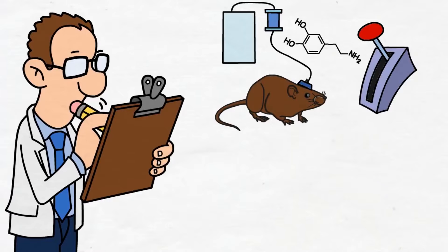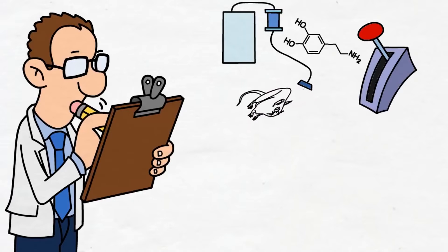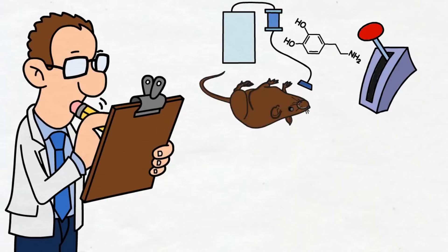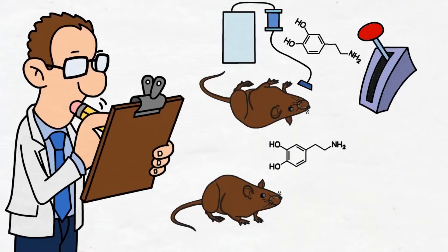The rats would refuse to eat or even sleep. They would just keep pressing the lever until they would drop from exhaustion. But then the process was reversed. The researchers blocked the release of dopamine in the brain's reward center. As a result, rats became so lethargic that even getting up to get a drink of water was not worth the effort.